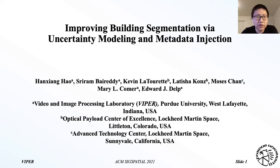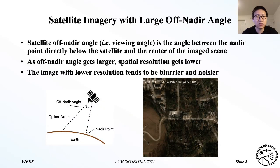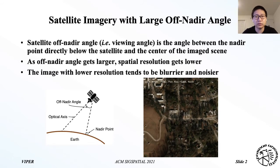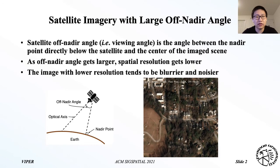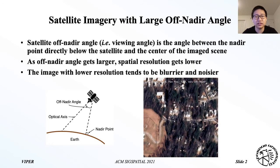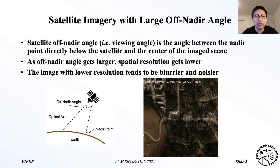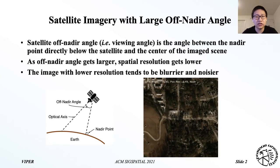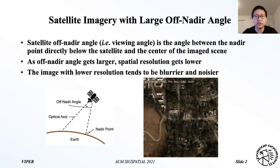Our paper's name is 'Improving Building Segmentation via Proximity Modeling and Metadata Injection.' In this paper, we consider the building segmentation task for satellite images with larger off-nadir angle. The off-nadir angle is the angle between the nadir point directly below the satellite and the center of the image. As the off-nadir angle gets larger, the image will get blurrier and noisier due to the lower spatial resolution.